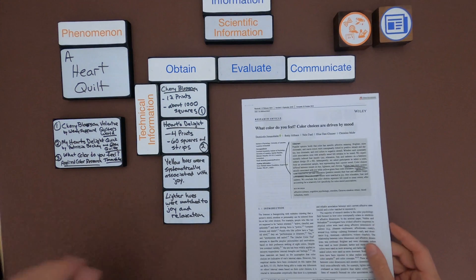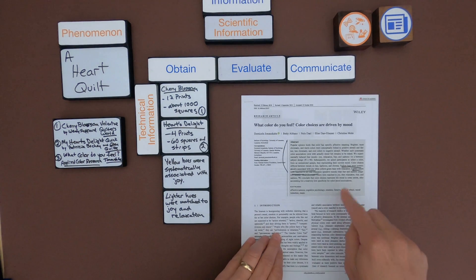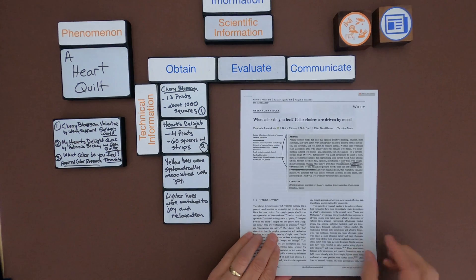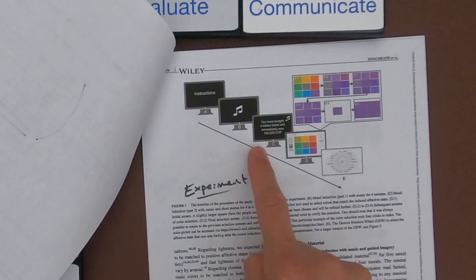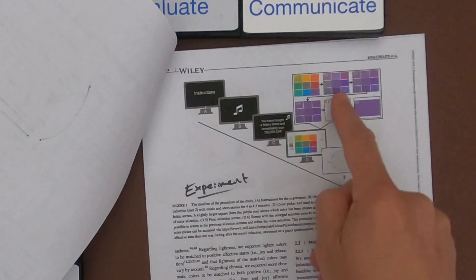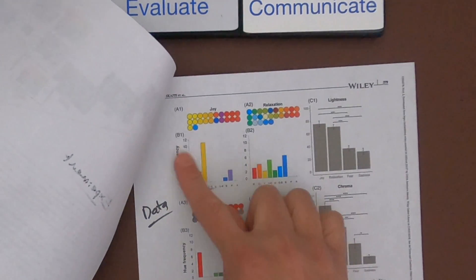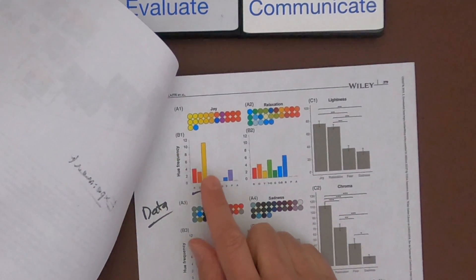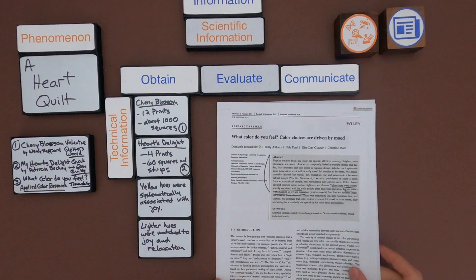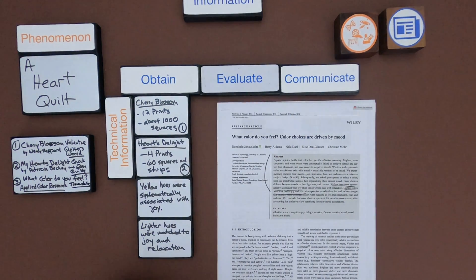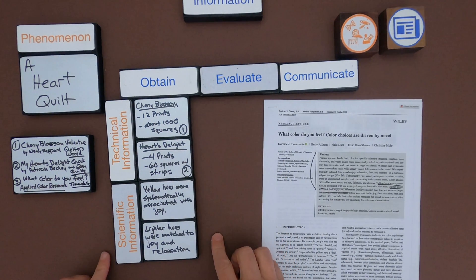The next source is an experiment submitted to the Color Research and Application journal by a group from an institute of psychology in Switzerland. They were showing people different scenarios — like 'you bought a lottery ticket and just won' — and then had people choose what color was associated with that. They gathered a lot of data and found that colors like red, orange, and especially yellow are associated with joy, whereas darker colors are associated with sadness. Since this is based on an experiment and observations, this would be scientific information.